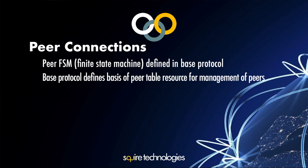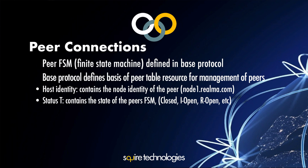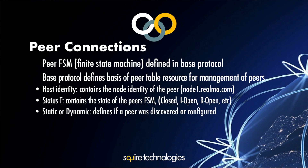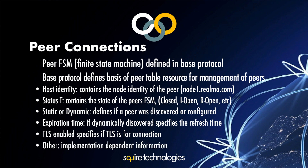The peer table is broken down into: host identity, containing the node identity of the peer — for example, groundA.com; status, containing the state of the peer — such as closed, open, remote open, or client open; static or dynamic, defining whether the peer was discovered or configured; expiration time, indicating how long a discovered peer entry is valid; and TLS enabled, indicating if TLS is connected.